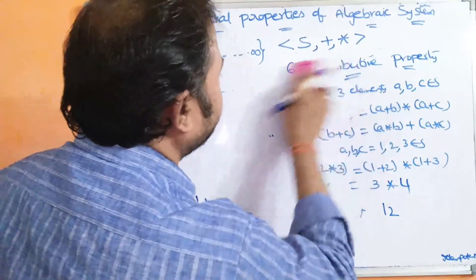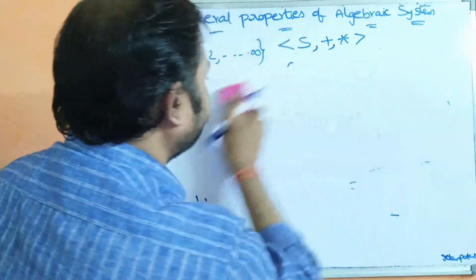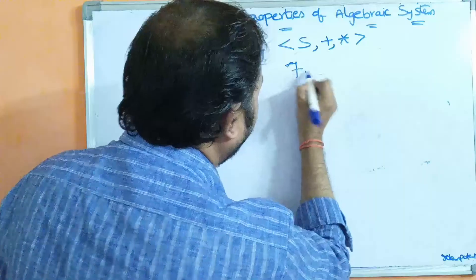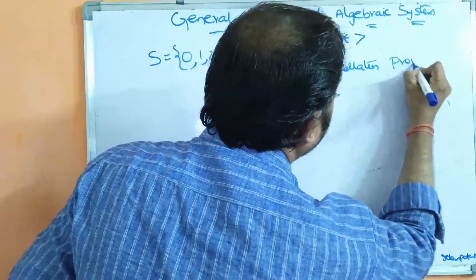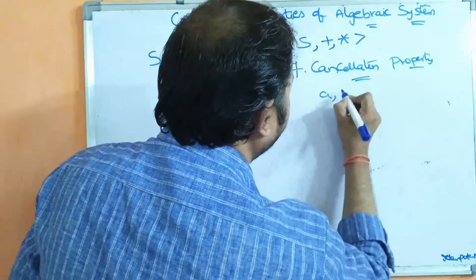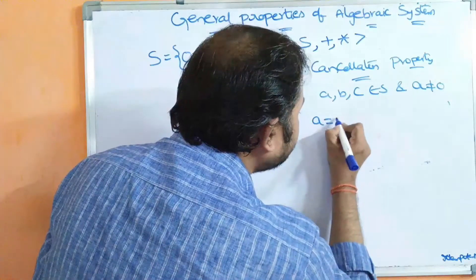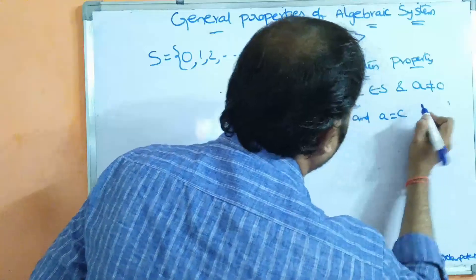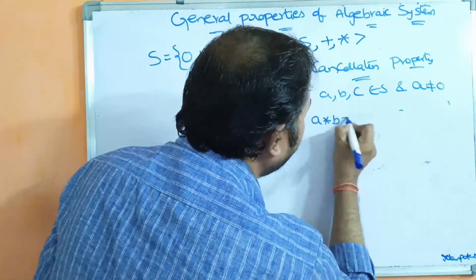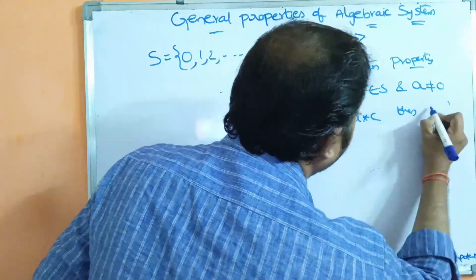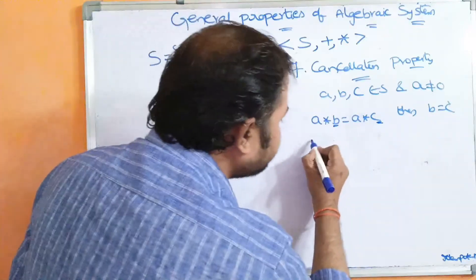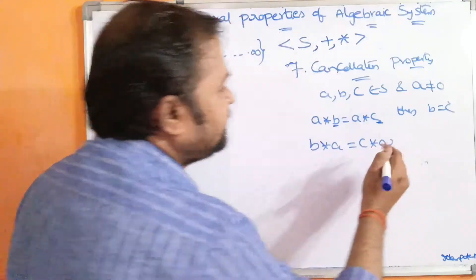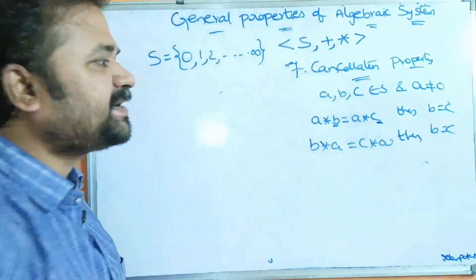The seventh property is cancellation property. For any three elements a, b, c belonging to S where a is not equal to 0: if a star b equals a star c, then we can conclude b equals c. Similarly, if b star a equals c star a, then b equals c. This property is called cancellation property.